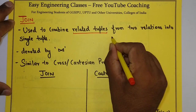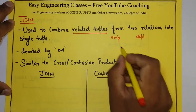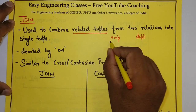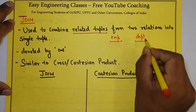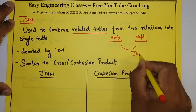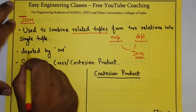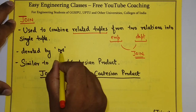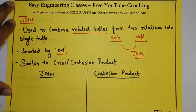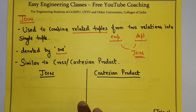For example, suppose we have a table Employee and a table Department, and if I have to find the result which uses both the tables in some related manner, then I will use join. Join is denoted by a particular symbol. It is similar to cross or Cartesian product, with a very small difference.